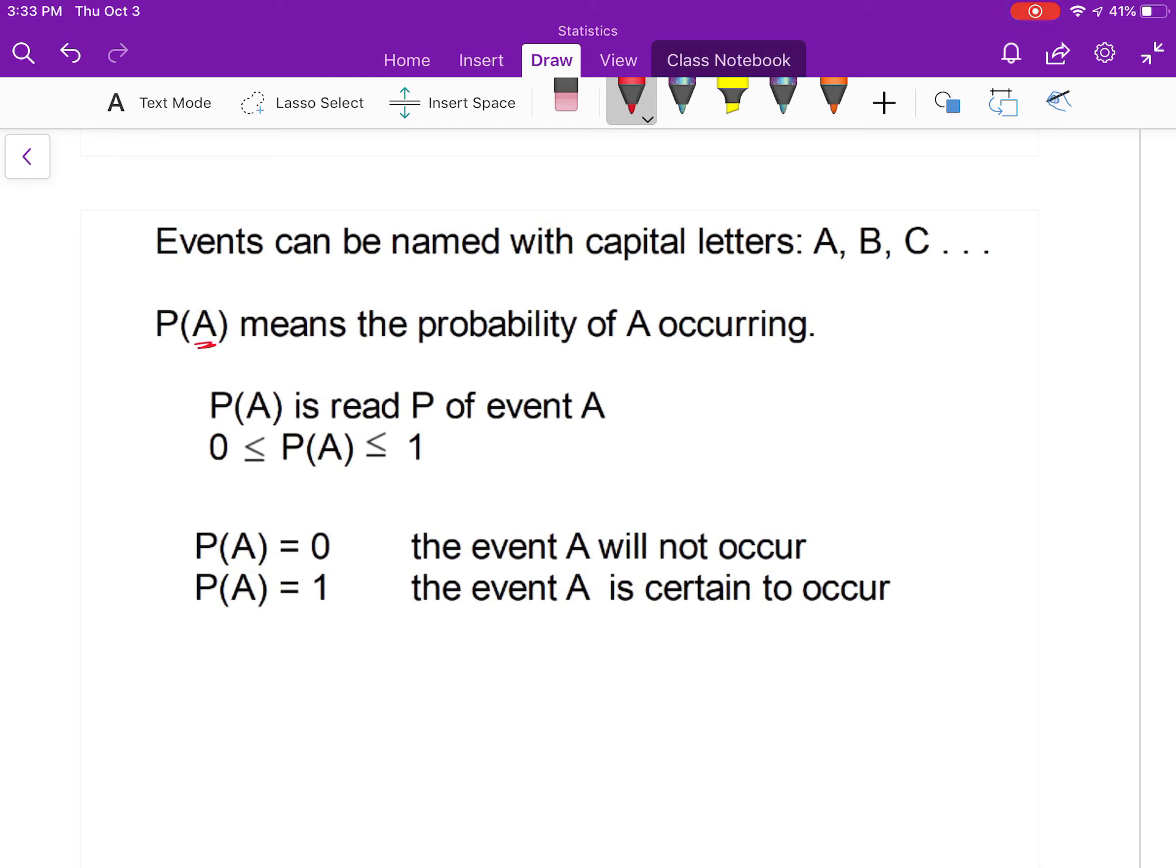This P with parentheses and A being on the inside means the probability of event A occurring. Event A could be defined as a number of things. Probability of A, or P(A), is read as probability of event A. It is greater than or equal to 0 and less than or equal to 1.